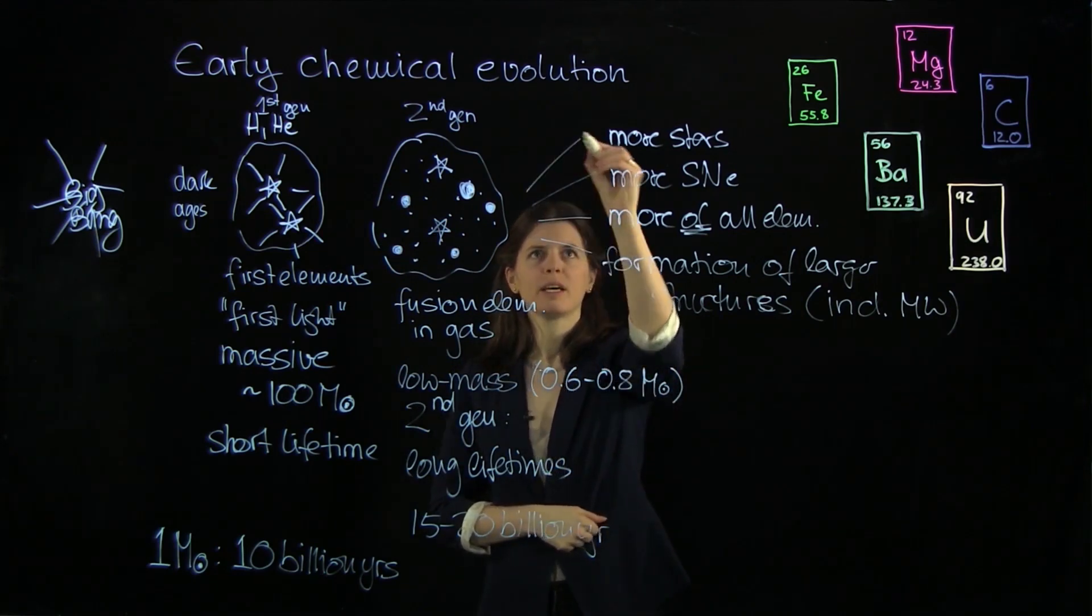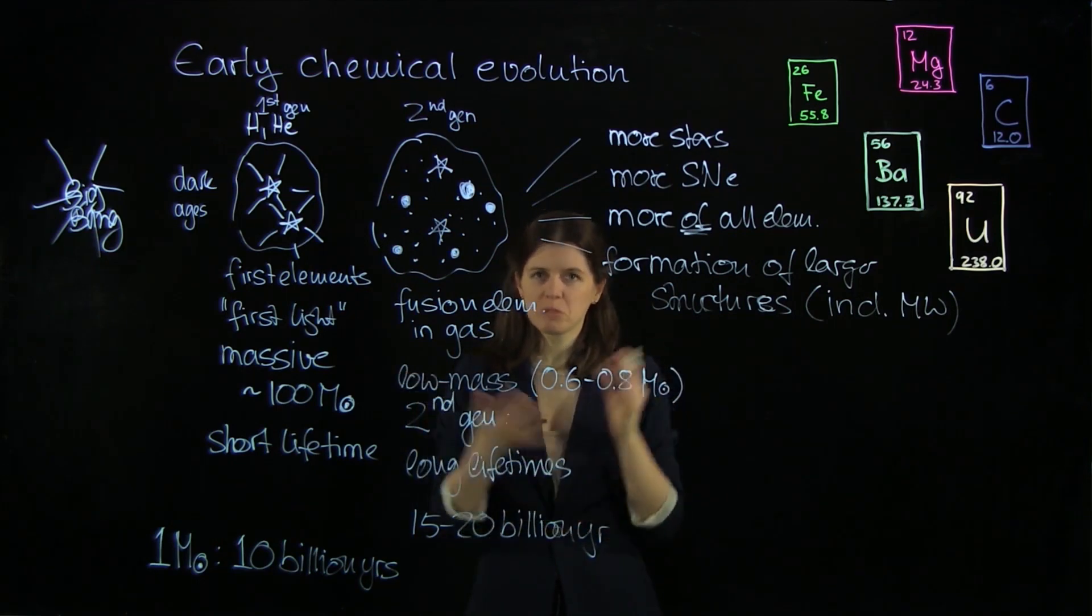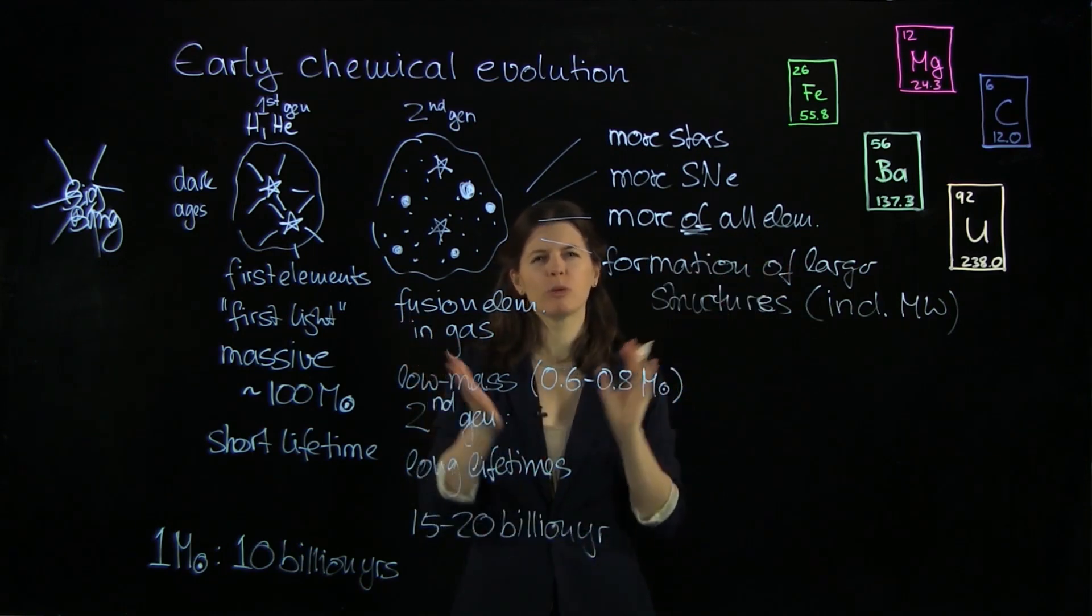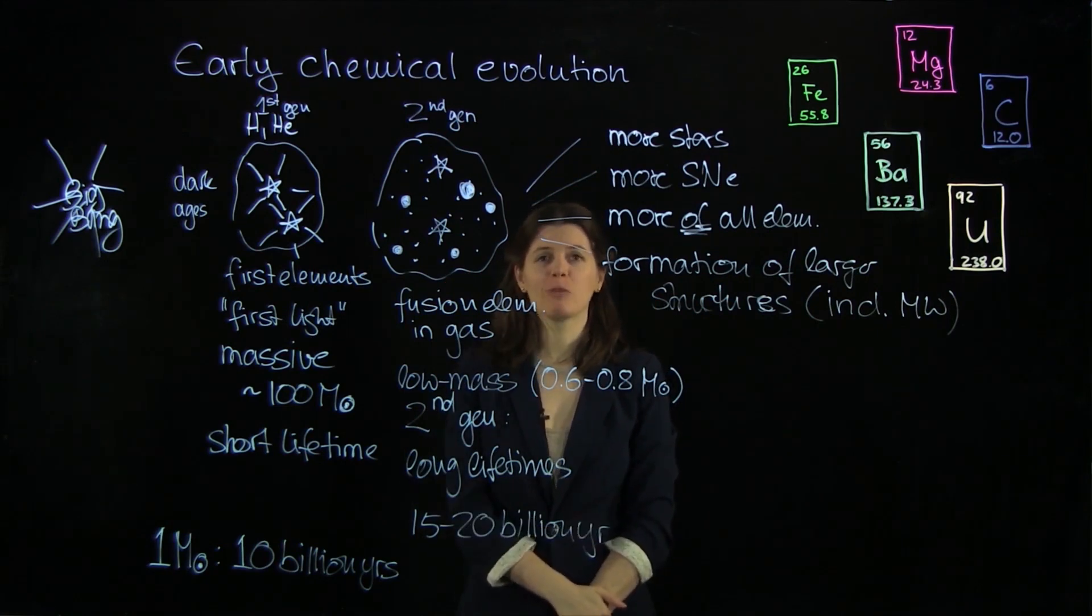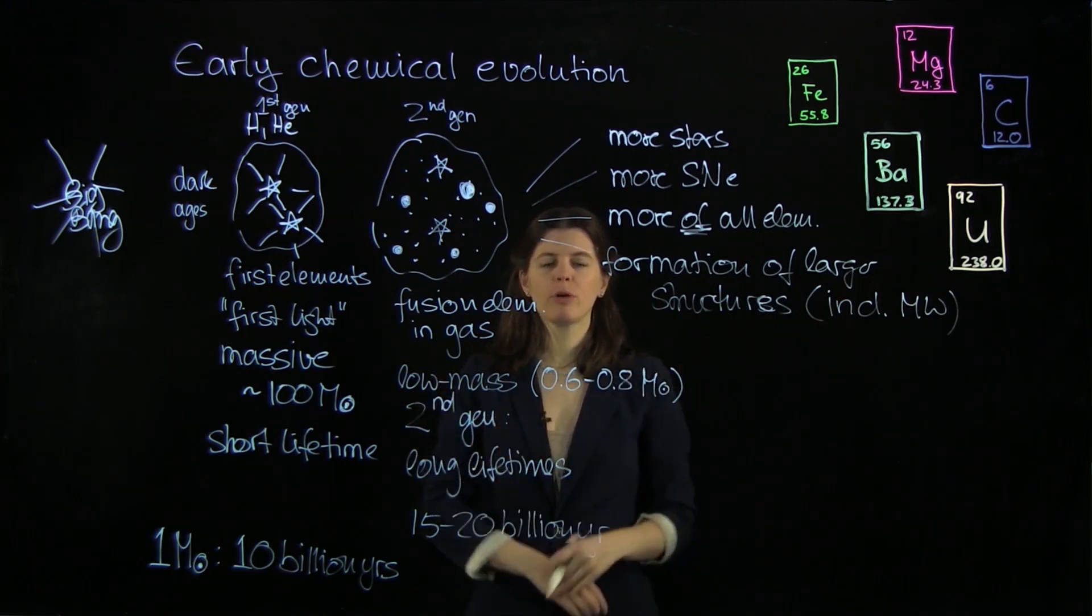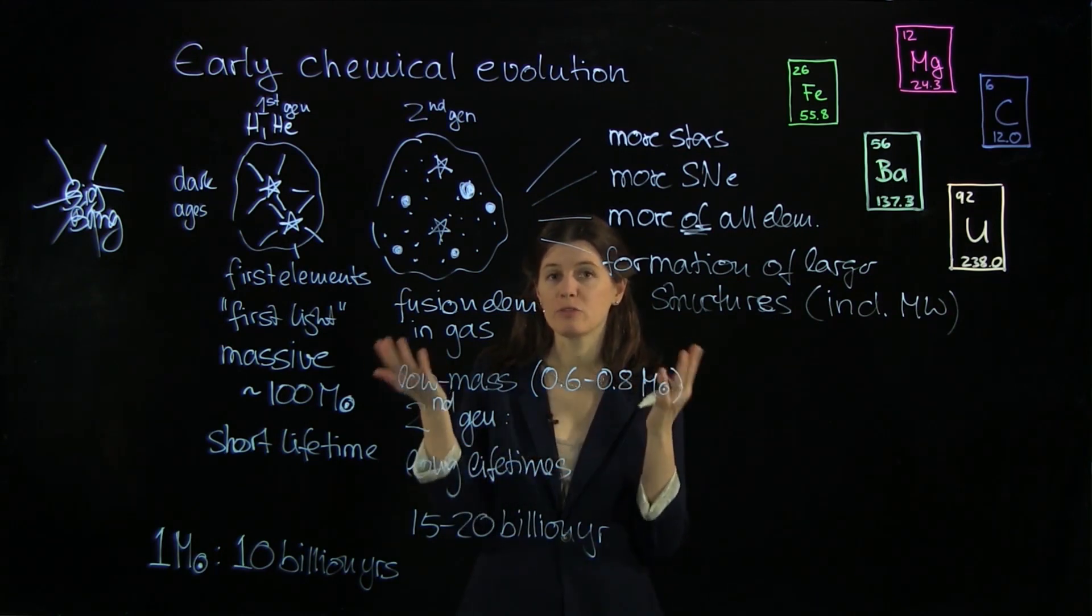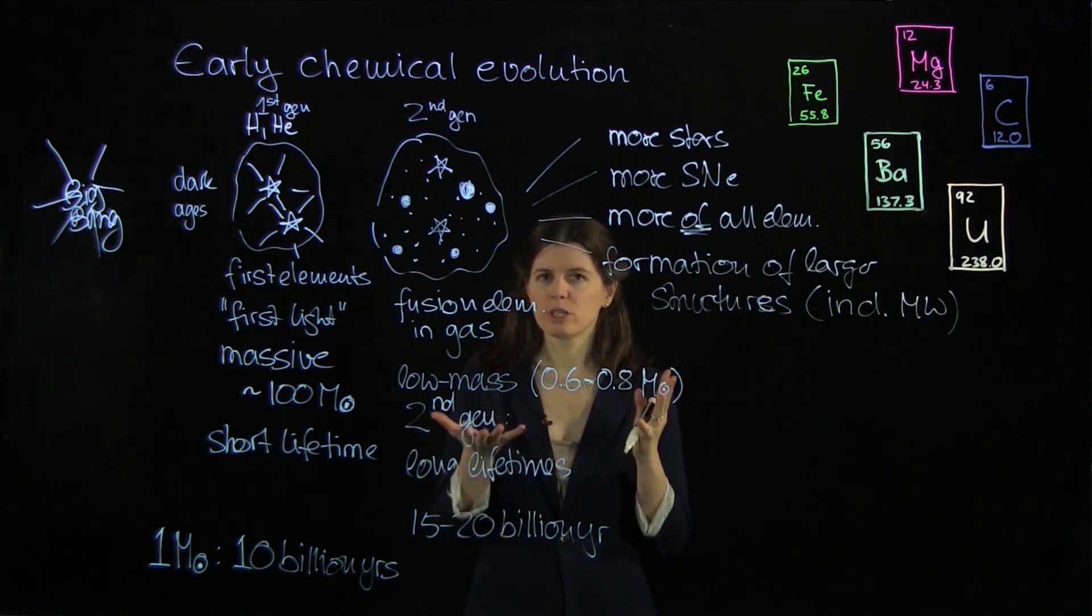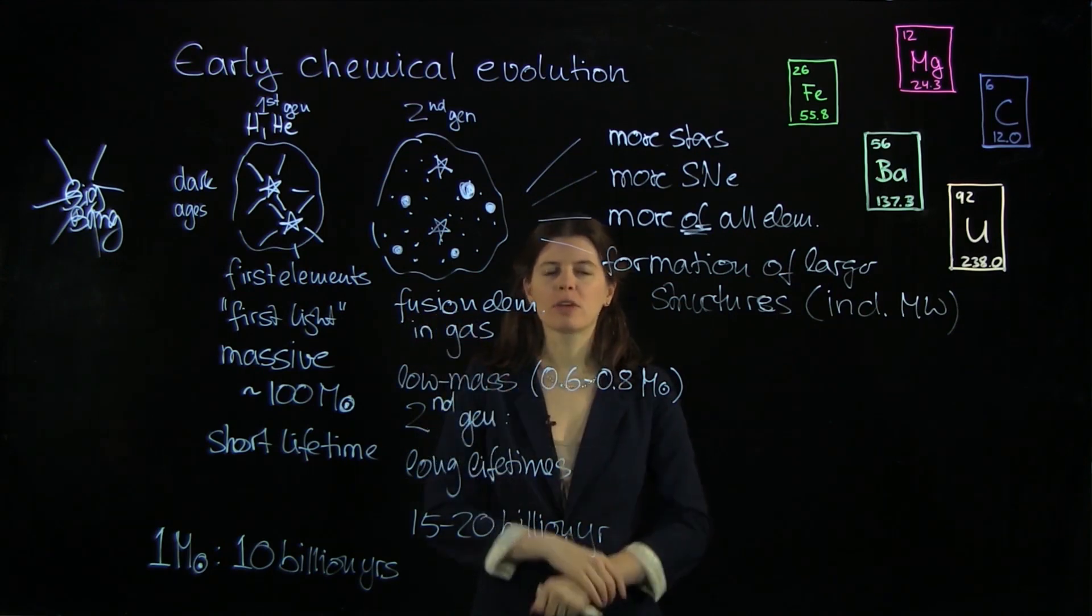And so all of this here happened as time went on until today. Today we have a universe that's full of structure and full of all the elements. Well a whole two percent but I think we can consider this full, at least if you're an astronomer. And chemical evolution is an ongoing process. So in the following we're going to look in more detail at chemical enrichment and chemical evolution and also stellar archaeology which is the way how we use old stars to trace these different early stages of chemical evolution.